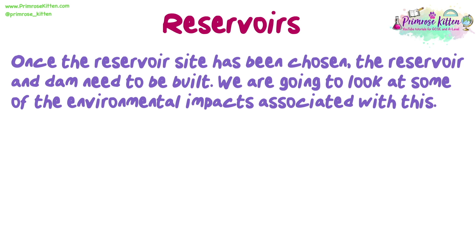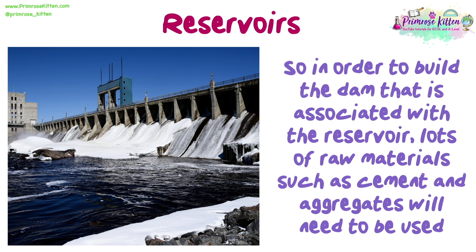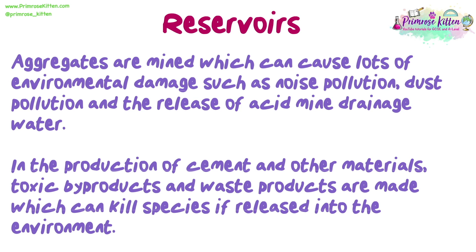Once the reservoir site has been chosen, the reservoir and dam need to be built. We're going to look at some of the environmental impacts associated with this, starting with the building process and then the impacts of the completed reservoir. To build the dam, lots of raw materials such as cement and aggregates will need to be used. Aggregates are mined, which can cause lots of environmental damage such as noise pollution, dust pollution and the release of acid mine drainage water. In the production of cement and other materials, toxic by-products and waste products are made which can kill species if released into the environment.